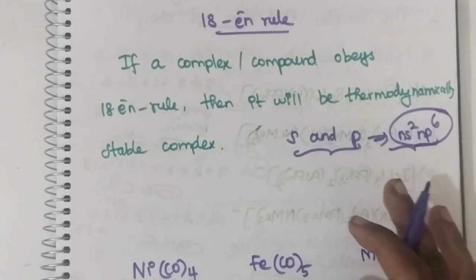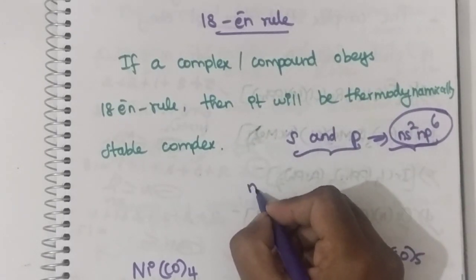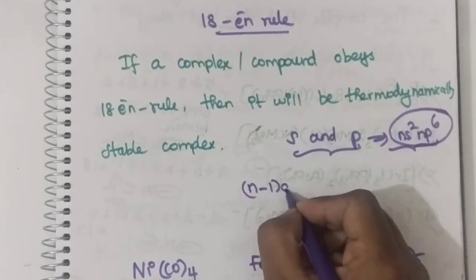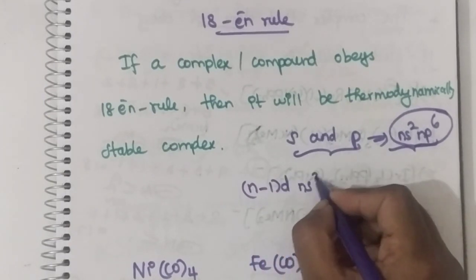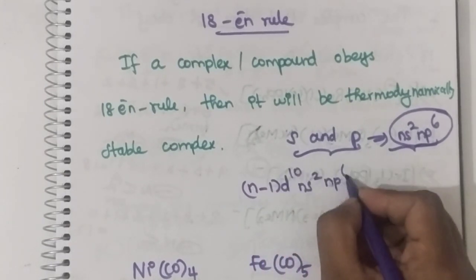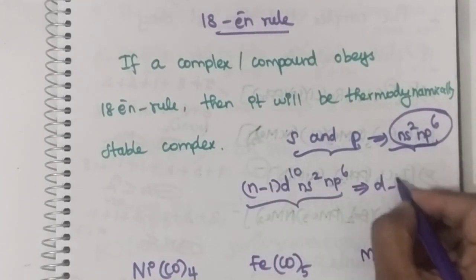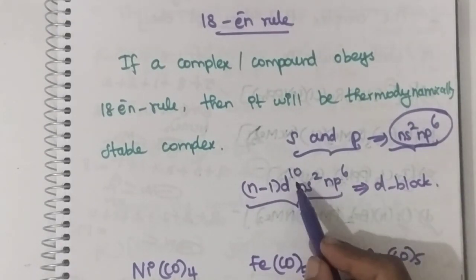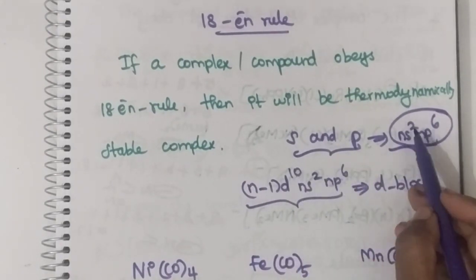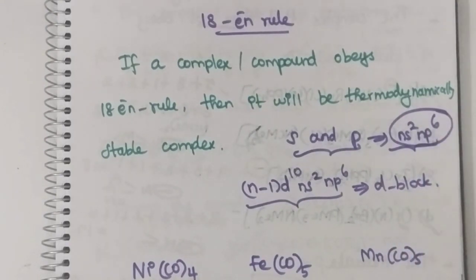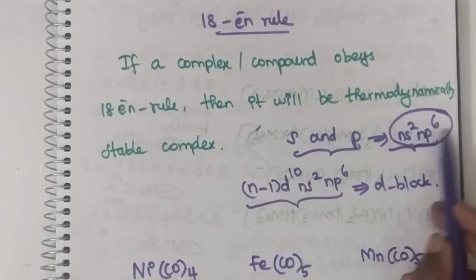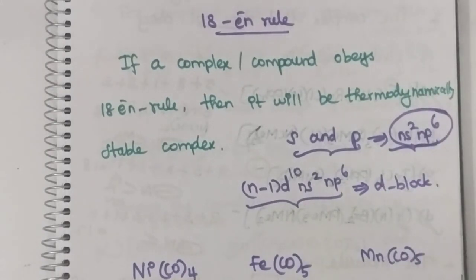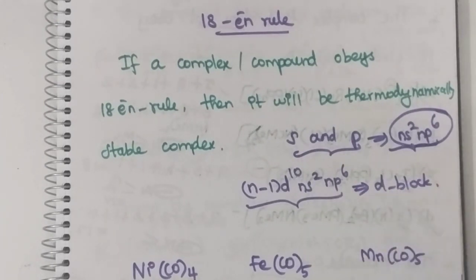Similarly, the 18 electron rule is applicable to D block elements. Here, (n-1)d, ns2, np6 is the electronic configuration for D block. This is 18 electrons — 10 plus 2 plus 6. So whenever a D block element has this configuration with 18 electrons, it will be stable. This is what is known as the 18 electron rule.